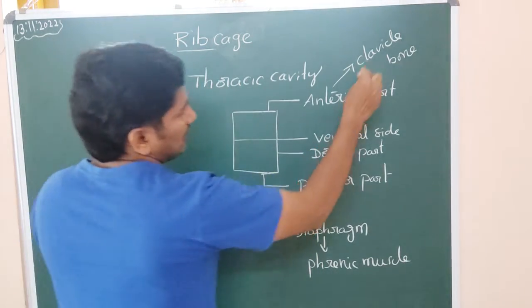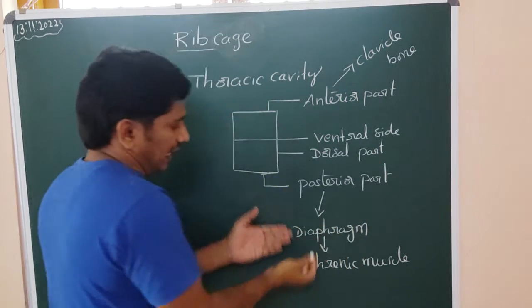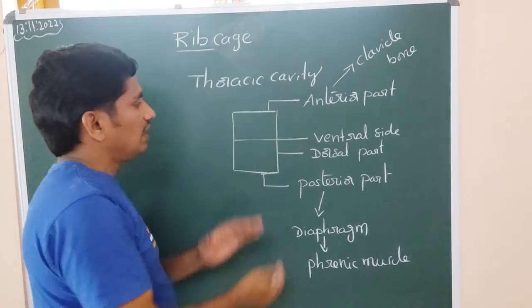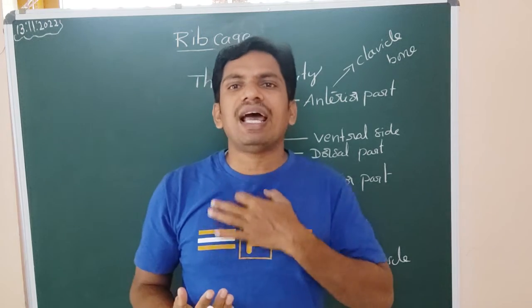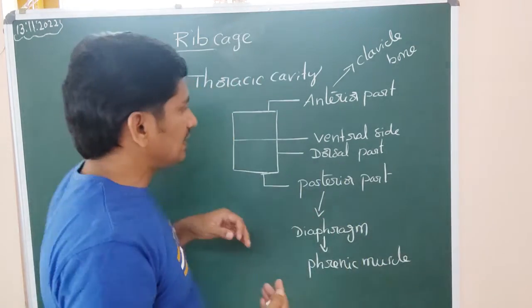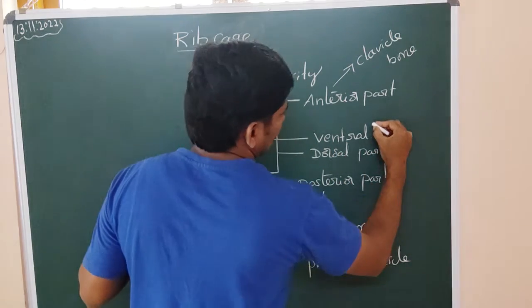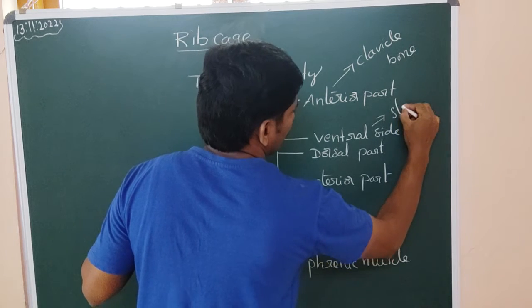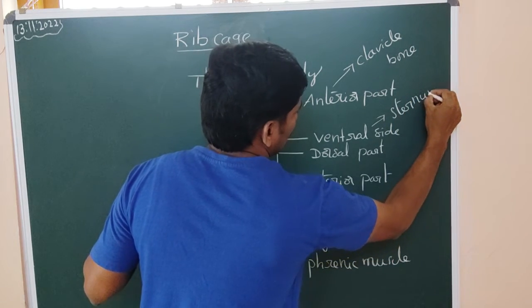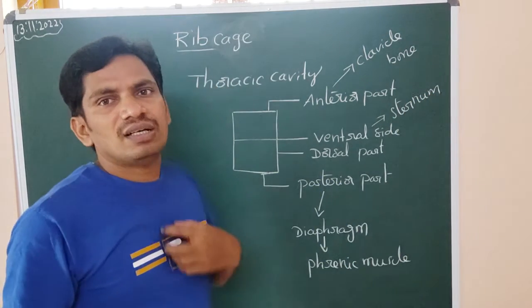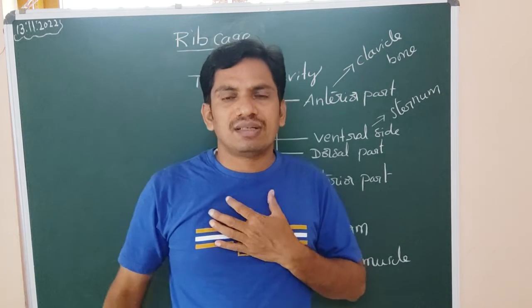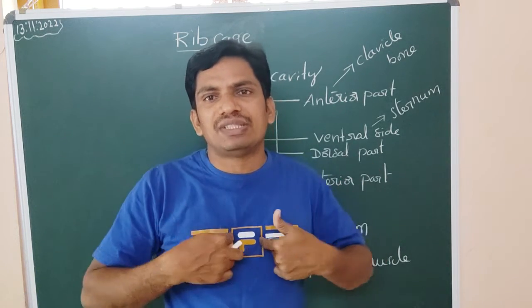Now here, the anterior clavicle and posterior diaphragm is completed. Whereas the ventral part - the ventral part is the anterior part. And to the anterior part of the sternum.